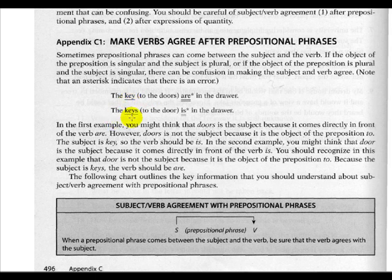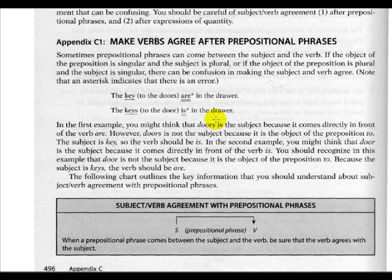In the second example: 'The keys to the door is in the drawer.' Here keys is plural and 'is' is a singular verb — that's incorrect. It should be 'The keys to the door are in the drawer.' The prepositional phrase 'to the door' does not determine the verb, even though it comes just before it. We need verb agreement between the subject and the verb.